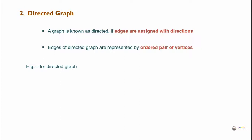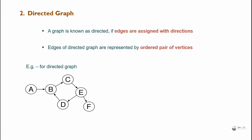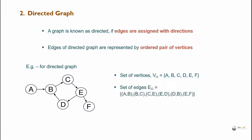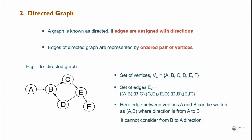Example for a directed graph: the set of vertices V = {A, B, C, D, E, F}. The edges are represented by ordered pairs depending on the directions: (A,B), (B,C), (C,E), (E,D), (D,B), and (E,F). In a directed graph, the edge between vertices A and B is written as ordered pair (A,B), where direction is from vertex A to vertex B. It cannot be considered from B to A direction.